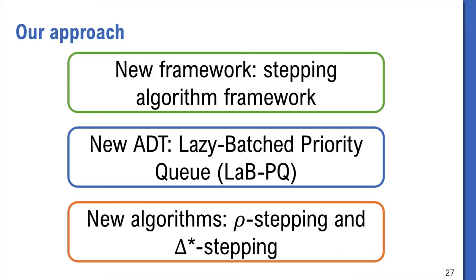So, I will then talk about our approach. Our idea has three key components. The first one is a new algorithmic framework called Stepping algorithm framework. It abstracts some common idea in theoretical algorithms. The second is a new ADT called Lazy-Batch Priority Queue. We call it LabPQ for short, to abstract the need of a priority queue in the Stepping algorithm. Then based on this framework, we propose two new algorithms, Rho-Stepping and Delta*-Stepping. The idea of each of them is very simple, but surprisingly, when we put everything together, we get very good results.